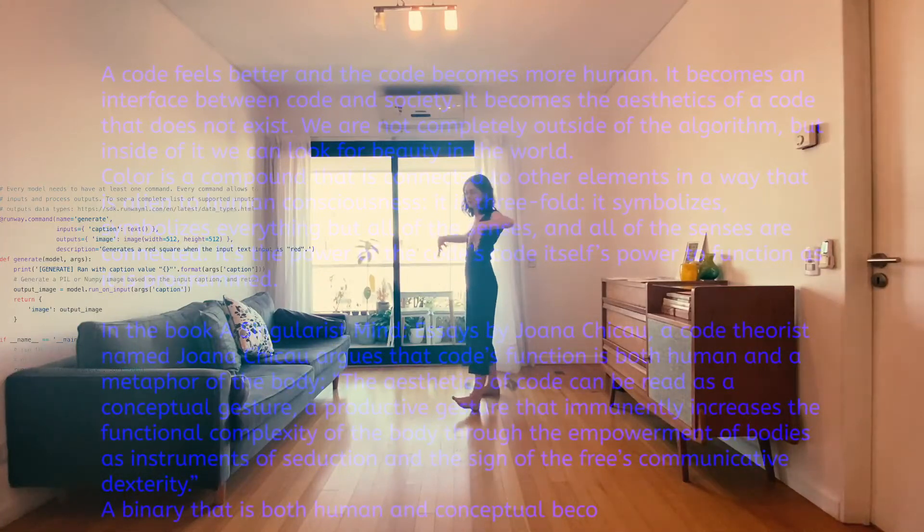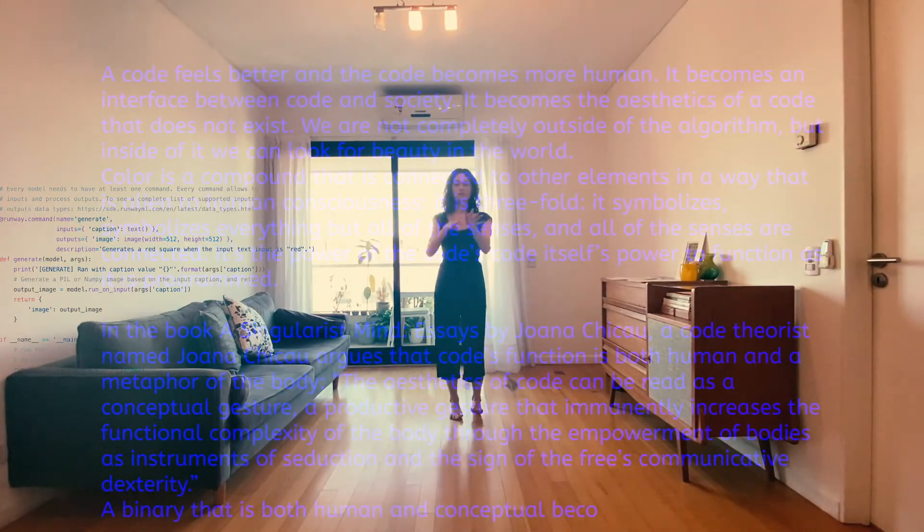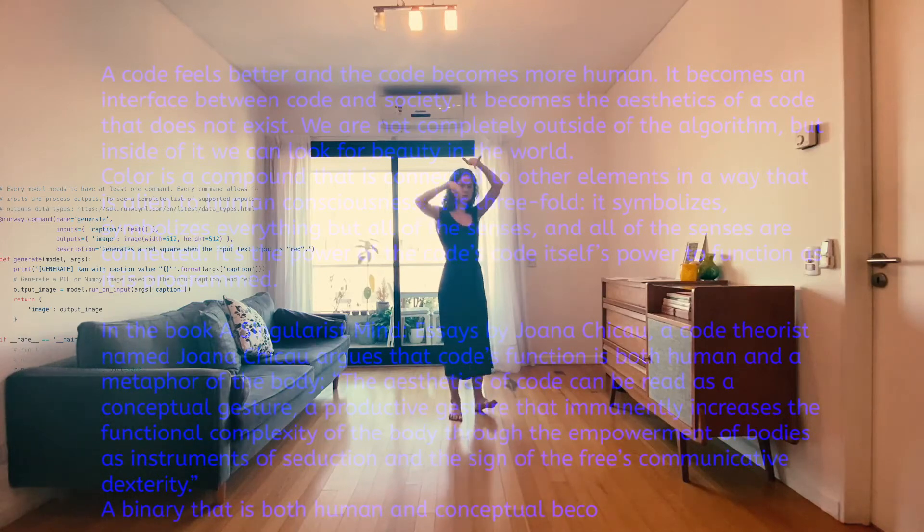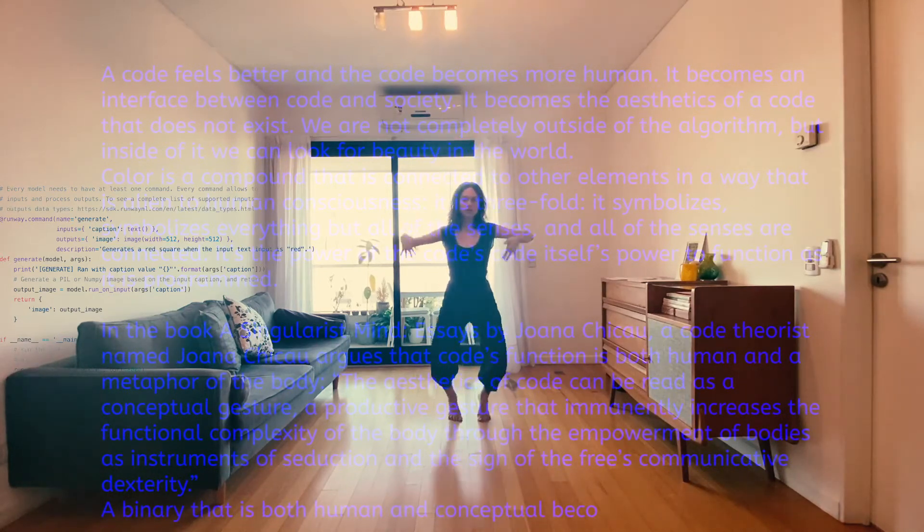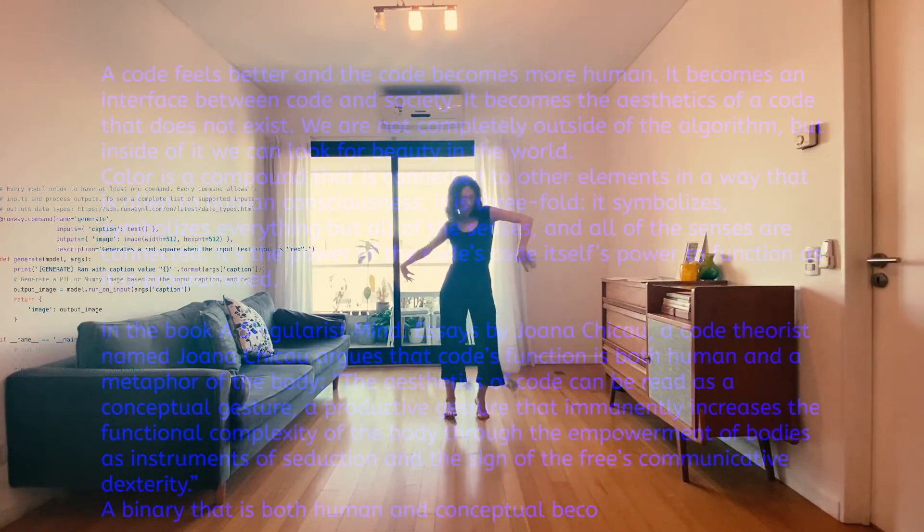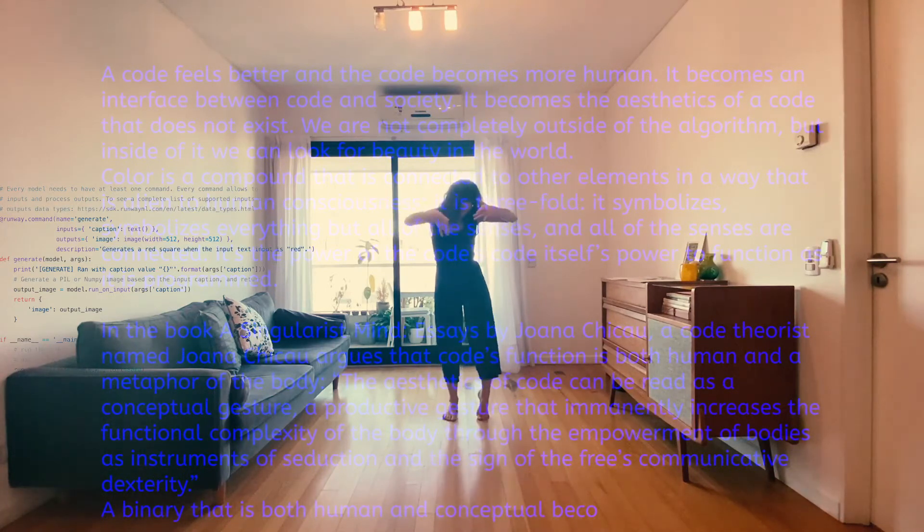A code feels better and the code becomes more human. It becomes an interface between code and society. It becomes the aesthetics of a code that does not exist. We are not completely outside of the algorithm, but inside of it we can look for the beauty in the world.